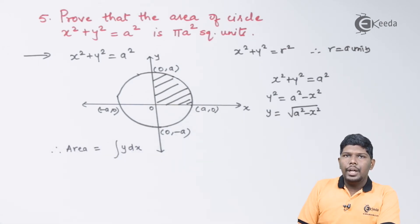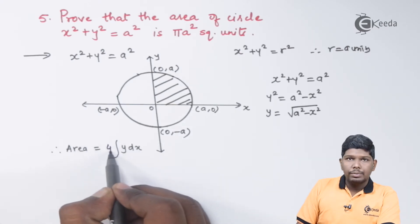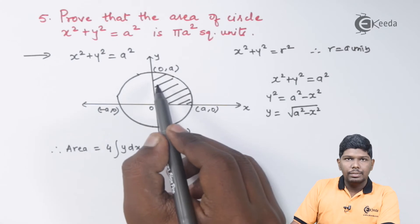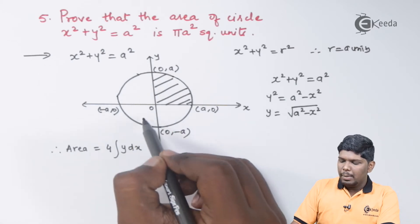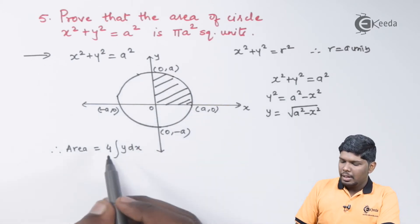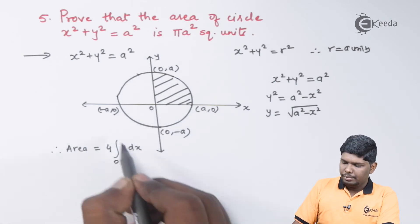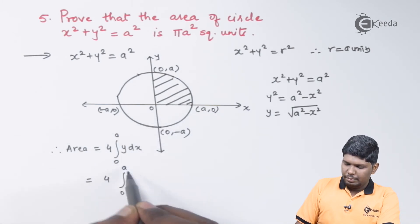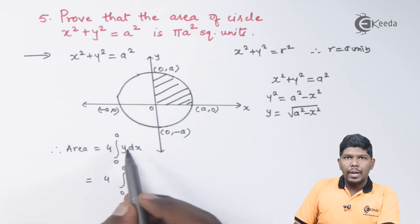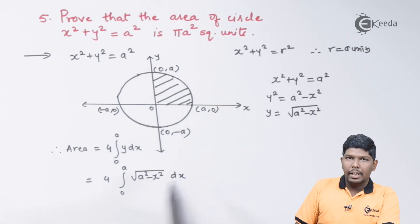The area equals 4 × ∫₀ᵃ y dx. We are multiplying by 4 because we are considering only the first quadrant; multiplying by 4 gives the full area of the circle. Substituting the value of y, we get 4 × ∫₀ᵃ √(a² − x²) dx.